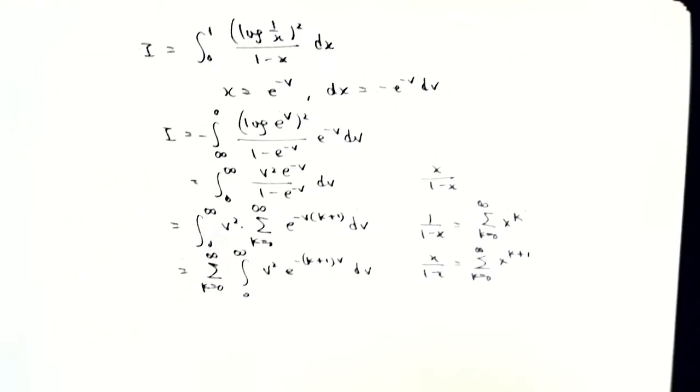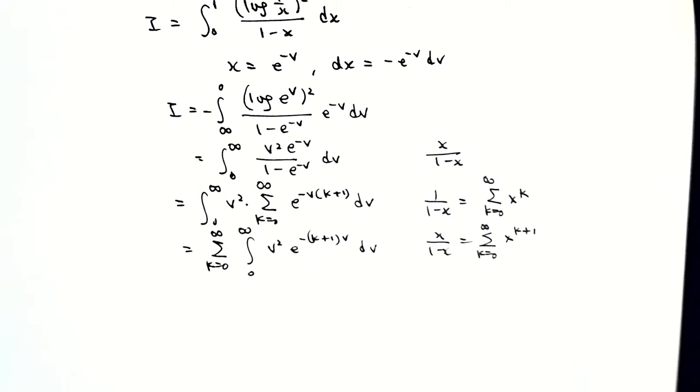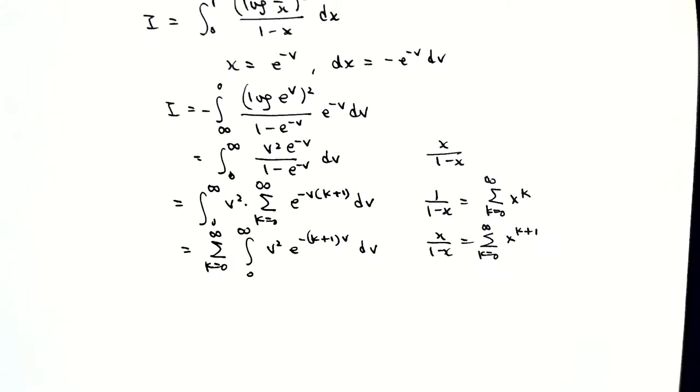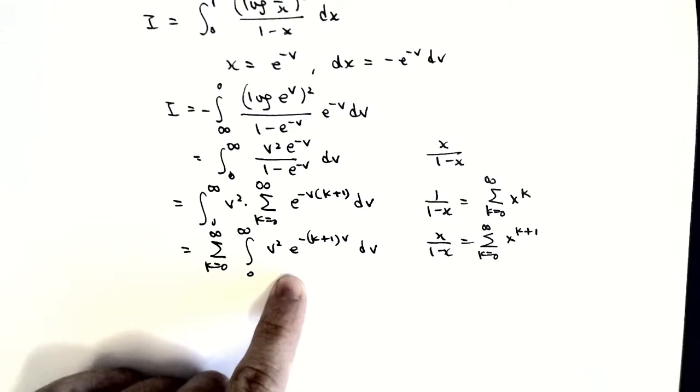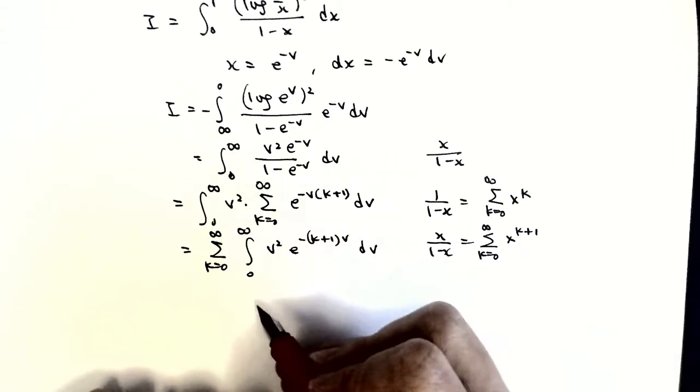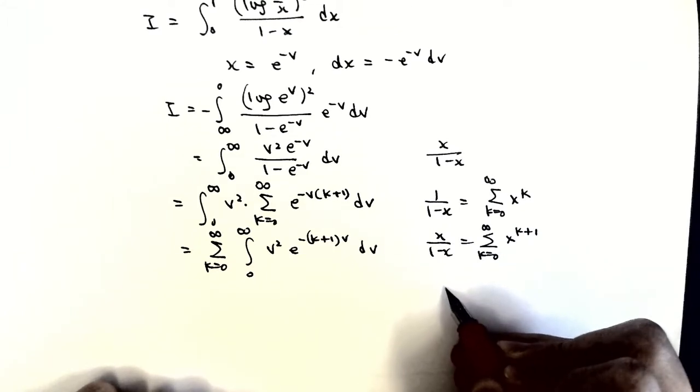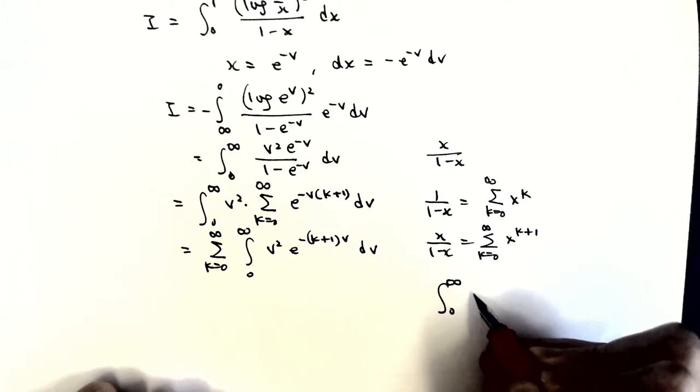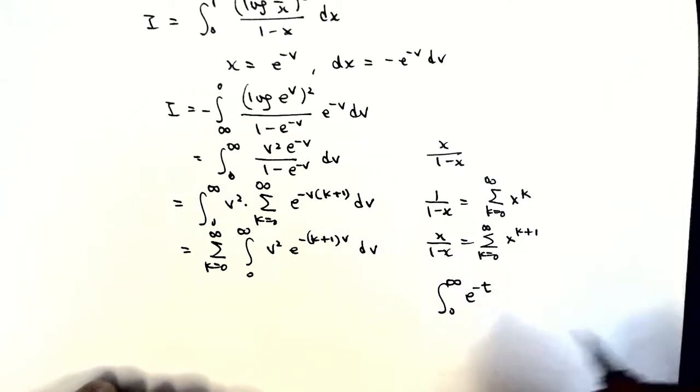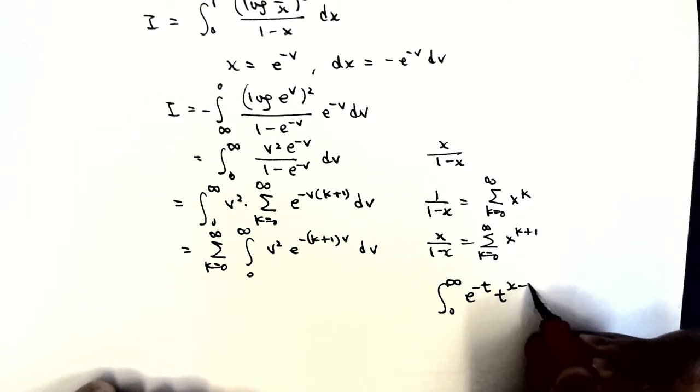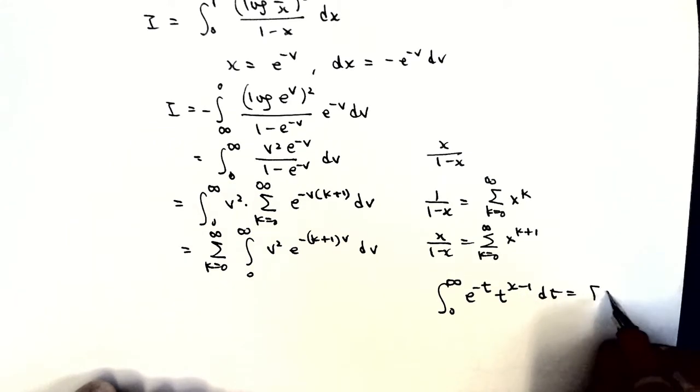Now, just like yesterday, we have to do something on this integral. We know this is the gamma function. Gamma function tells us that integral of e to the minus t times t to the x minus 1 dt is gamma of x.